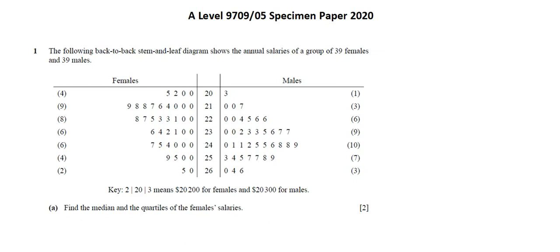We're given a stem and leaf diagram. In part A, we're asked to find the median and the quartiles of the female's salaries. We see that females is on the left of the diagram. That's where we'll be focusing. In the given information, we see we're working with 39 females.